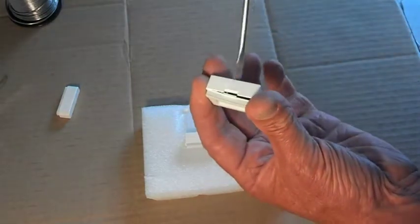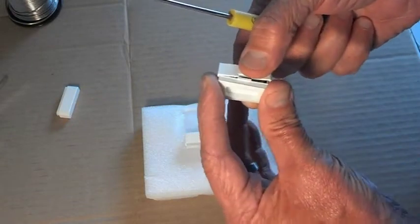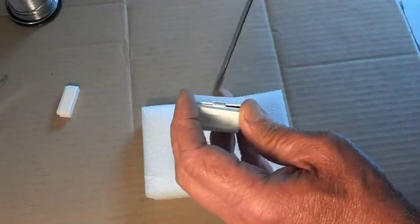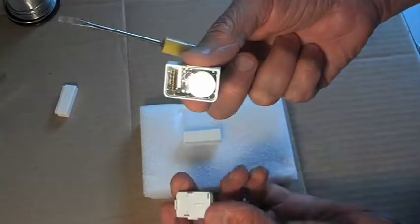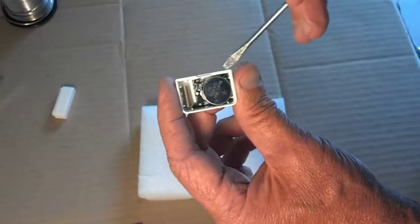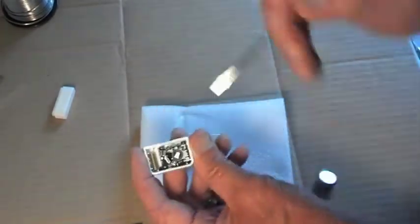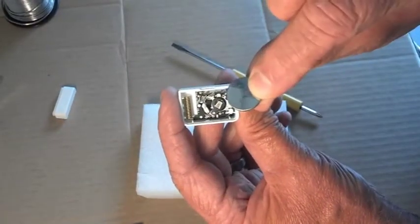So first thing I do is I simply just put a screwdriver in there and snap the back off. Let's take a look inside. There's the back and there's the transmitter. You'll notice that there is a large button battery here. I'll simply just lightly pry up and remove that button battery like that.